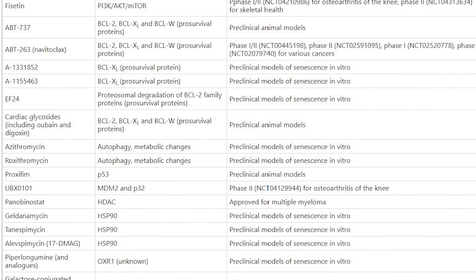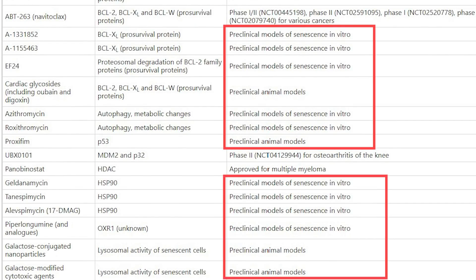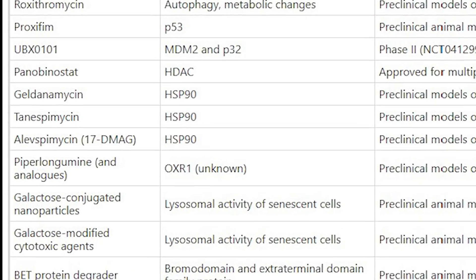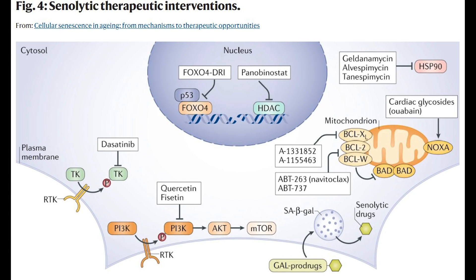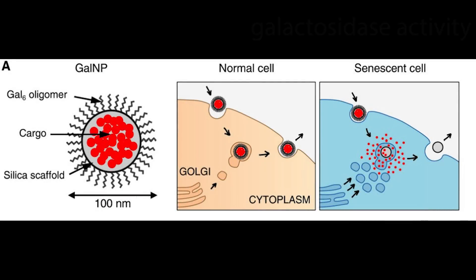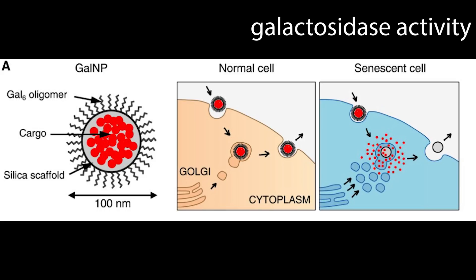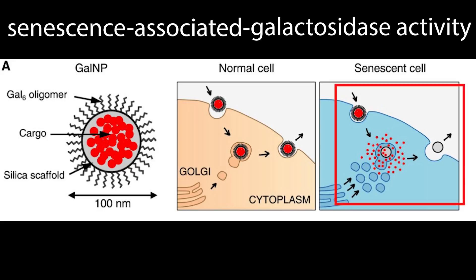Many other senolytic compounds have so far only made it to preclinical models using mice as in vivo models. Also worth pointing out are galactose-conjugated senolytic prodrugs, which act slightly differently — instead of targeting proteins already in the cell, they deliver a cytotoxic agent within a nanocarrier that only gets degraded when there is beta-galactosidase activity. Since senescent cells have high activity of senescence-associated beta-galactosidase, the compound only breaks down in senescent cells, releasing the cytotoxic agent to selectively kill them.